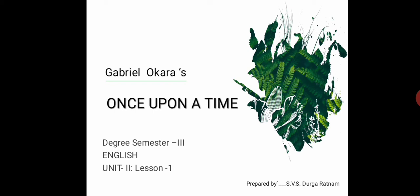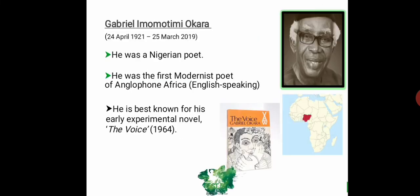Let us know a few things about the poet Gabriel Okara. His full name is Gabriel Imomotimi Okara. He was born in 1921 and was a Nigerian poet. He was the first modernist poet of Anglophone Africa, best known for his early experimental novel 'The Voice,' published in 1964. He was born in Nigeria, which is located in Western Africa — shown in red on the Africa map.